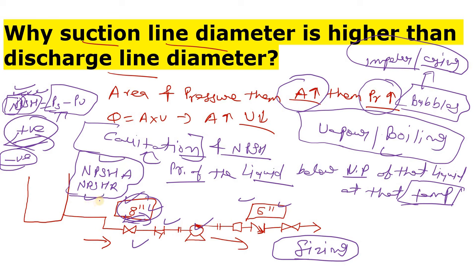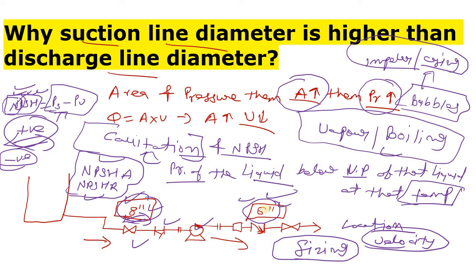There is one more reason I personally feel. On the discharge side, we have decreased the diameter. This means two things: friction loss will be increased, but also we have to transfer that fluid to a particular location, and for that we require a certain velocity. If we decrease the diameter, velocity will be increased - and that could be one reason why the discharge diameter is less. If you know another reason, let me know in the comments box.